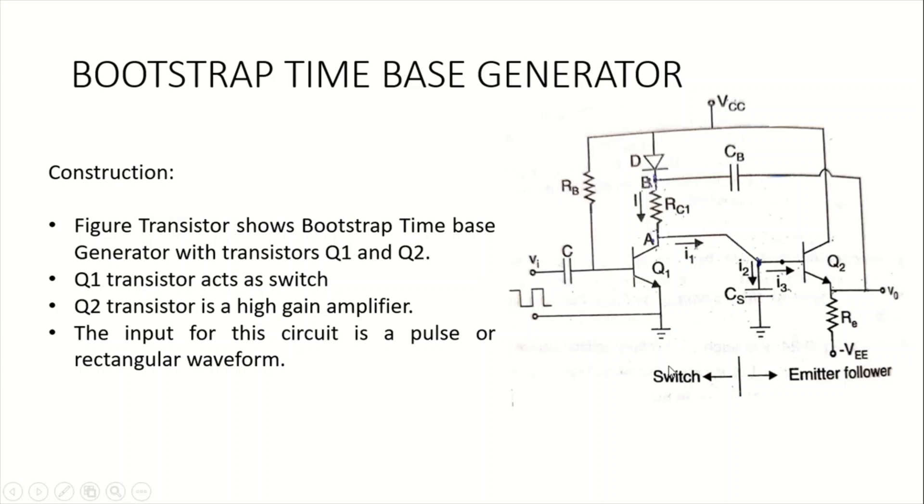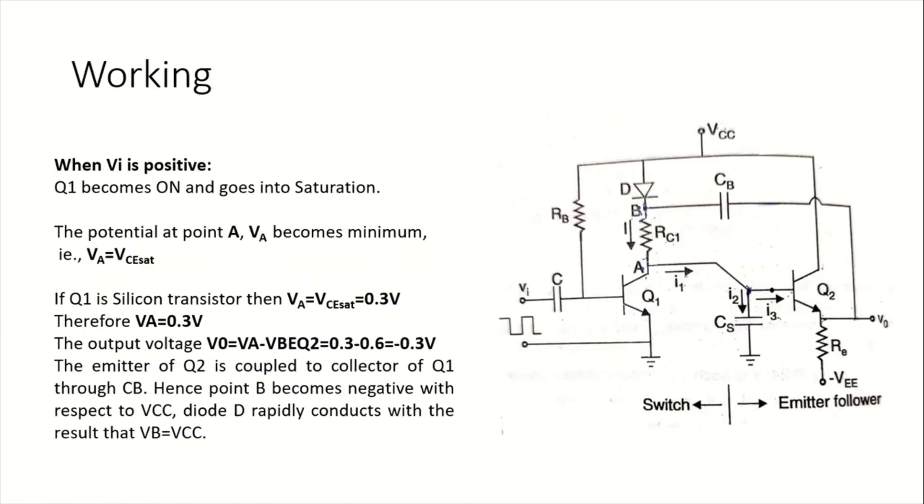Now let's discuss how this circuit actually works. When the input signal Vi is positive, the transistor Q1 becomes ON and goes into saturation. When this transistor is ON and goes into saturation, we can find the collector potential at point A as VCsat. This VCsat for a silicon transistor is approximately 0.3 volts.